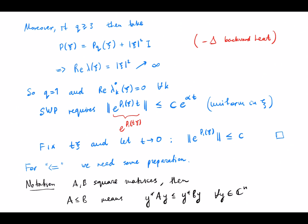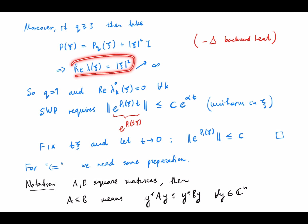Second, we want to show that q must be one. If q is at least three, we are allowed to perturb by a second-order operator and we simply choose the backward heat operator. If we perturb by the backward heat operator, because the principal part has only purely imaginary eigenvalues, the real part will grow like xi squared and go to infinity. So you cannot have a third-order operator.